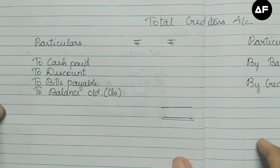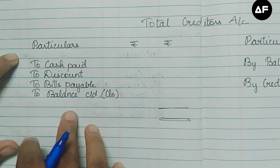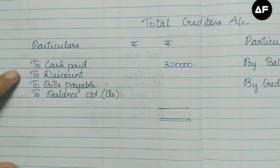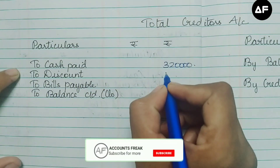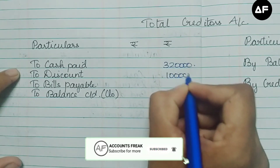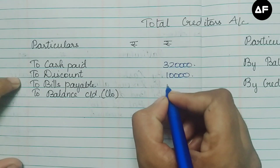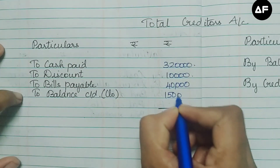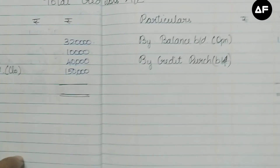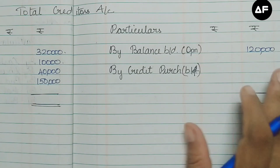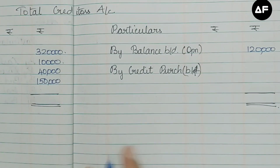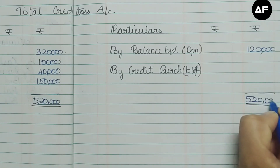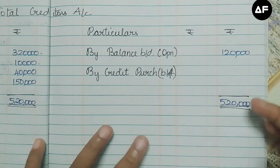Moving to the debit side of the total creditors account: cash paid to creditors is 3,20,000; discount allowed by suppliers is 10,000; bills payable transferred from the bills payable account is 40,000; and the closing creditor value is 1,50,000. The debit side totals 5,20,000, which is the greatest total. Writing 5,20,000 as the grand total on both sides.